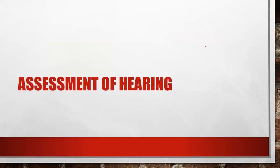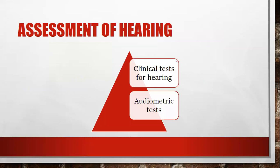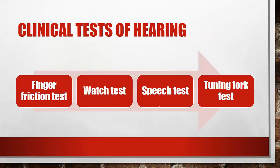Next is assessment of hearing. We can use different techniques, methods, and diagnostic procedures to assess hearing function. Assessment of hearing mainly involves two types of tests: clinical tests for hearing and audiometric tests. Clinical tests for hearing involve mainly four tests: finger friction test, voice or speech test, and tuning fork tests.